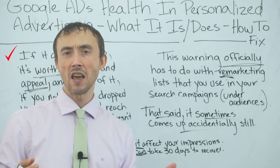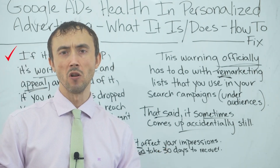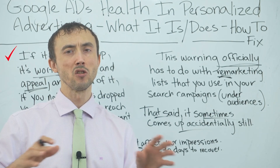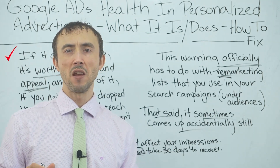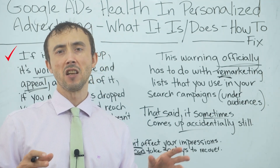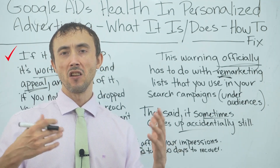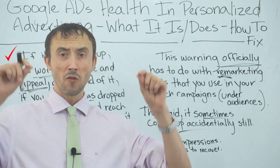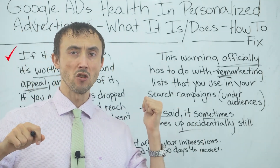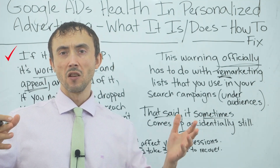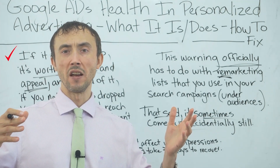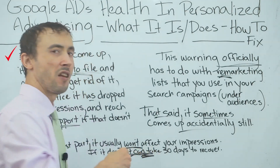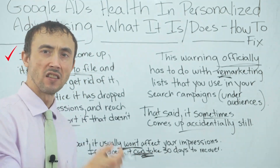Reaching out to support is frustrating because most people without clout with Google can't call them and can't get on chat support — you'll just go through email, it's slow, and it's annoying. But it's worth doing if you've lost impressions because of this warning and it's clearly the cause. If your impressions went down once this showed up, you have no choice.